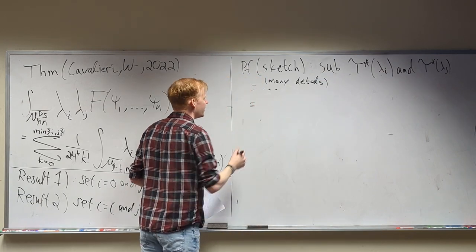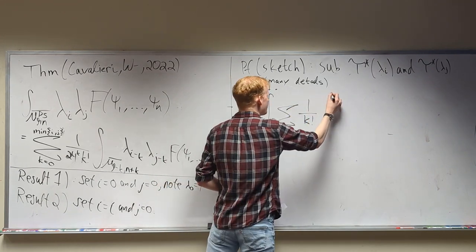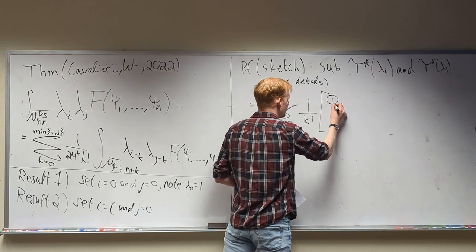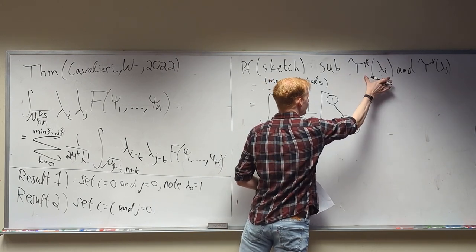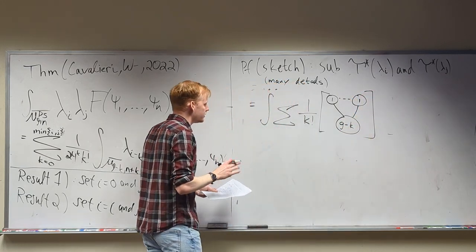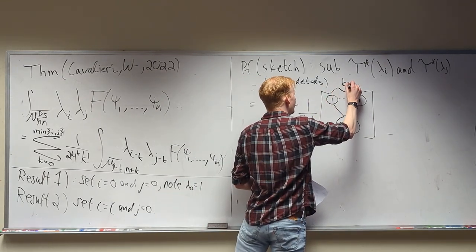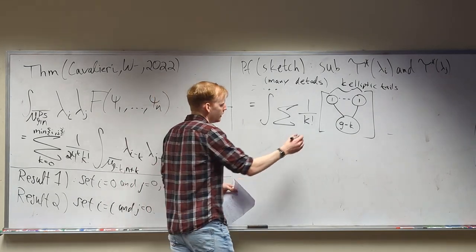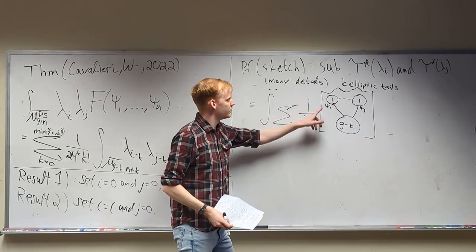Eventually you get down to an integral of a sum of 1/k factorial of a bunch of classes of stable curves. This graph should look familiar from earlier — it comes from the formulas for these pullbacks. You get a sum of 1/k factorial with classes of curves. There are k elliptic tails, and somewhere in the chaos you get a bunch of self-intersections that give you a psi class on each one of the nodes of these elliptic tails. The lambda classes and everything else congregate down on the main component.